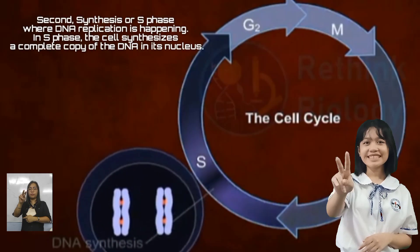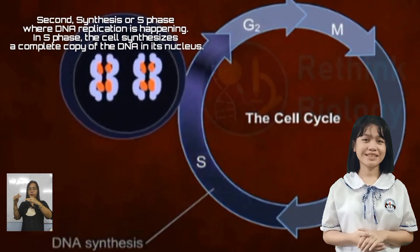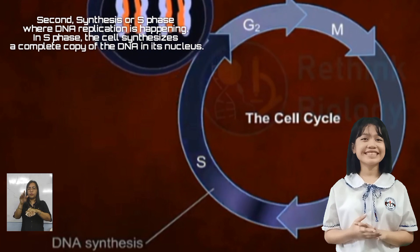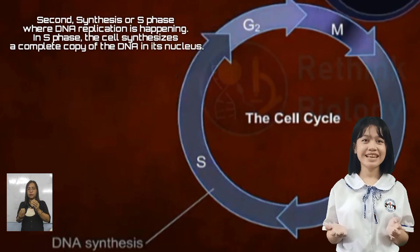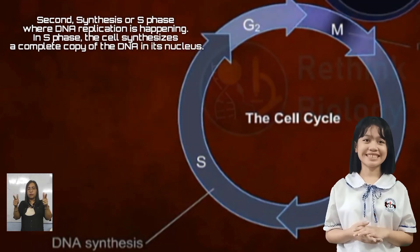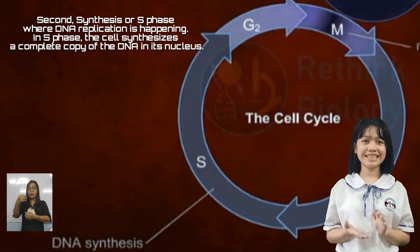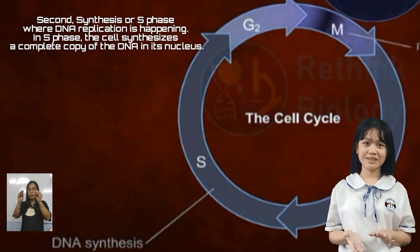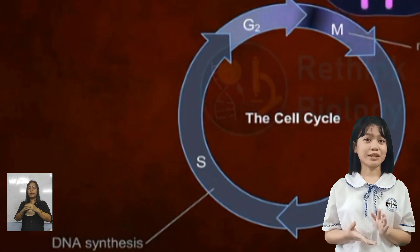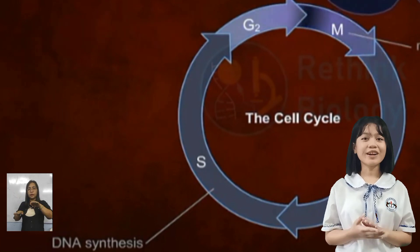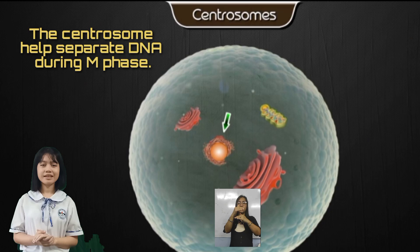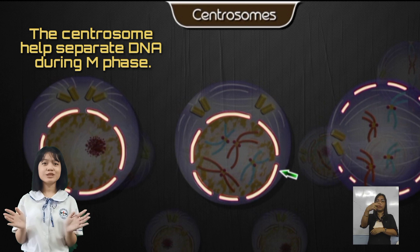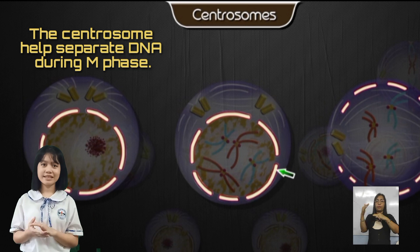Second, synthesis or S phase, where DNA replication is happening. At S phase, the cell's tinesis makes a complete copy of the DNA into place. It also duplicates a microtubule-organized structure called the centrosole. The centrosole helps separate DNA during M phase.